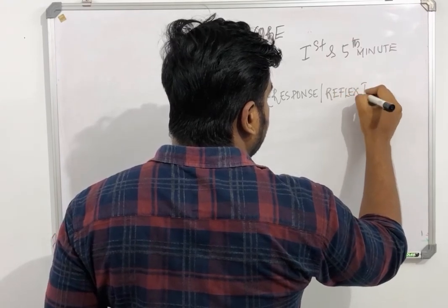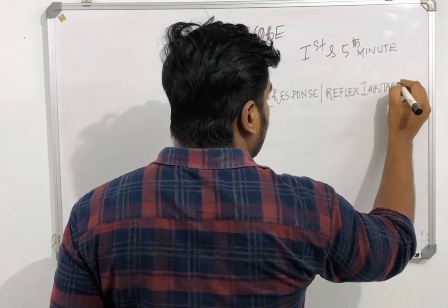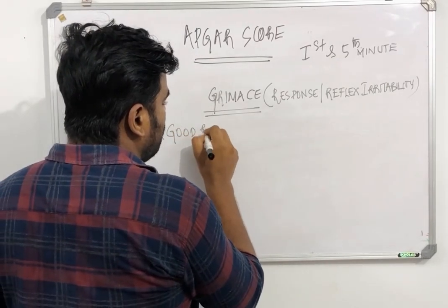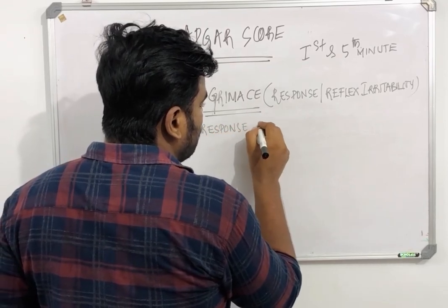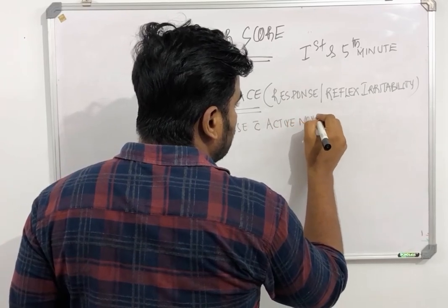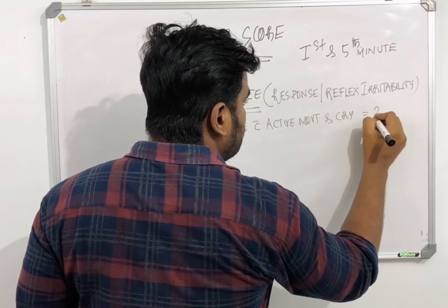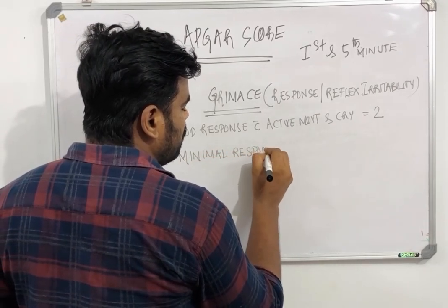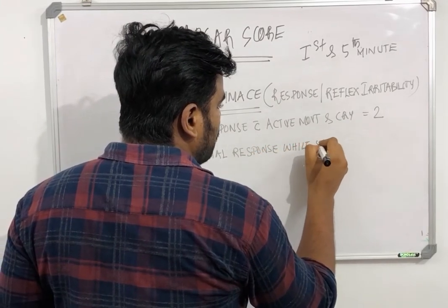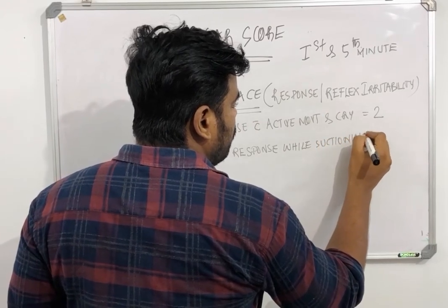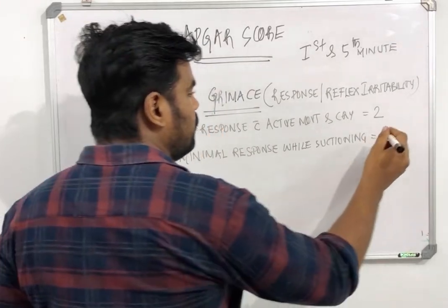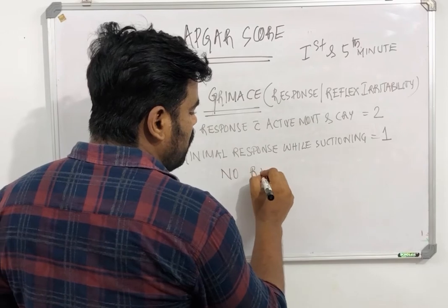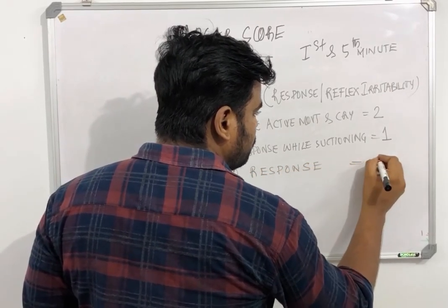Grimace is also called reflex irritability — it checks the response of the baby. If there is a good response with active movement and cry, the score is two. If there is only a minimal response while suctioning or while giving a gentle slap on the sole of the foot, the score is one. No response gives a score of zero.